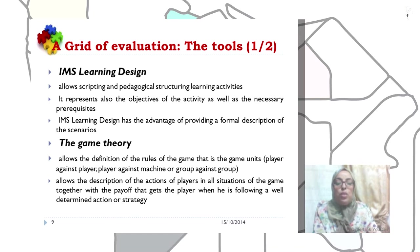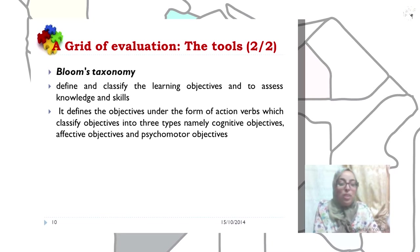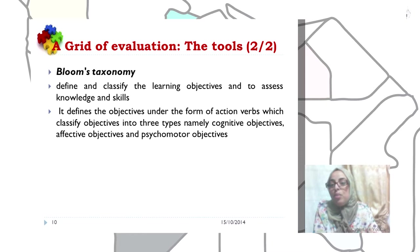Game theory covers game units such as player against player, player against machine, or group against group, and allows the description of the actions of players in all situations of the game, together with the payoff the player receives when following a well-determined action or strategy. Bloom's taxonomy defines and classifies the learning objectives and assesses knowledge and skills. It defines objectives in the form of action verbs, classifying them into three types: cognitive objectives, affective objectives, and psychomotor objectives.